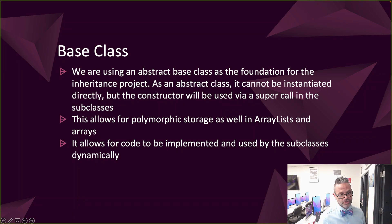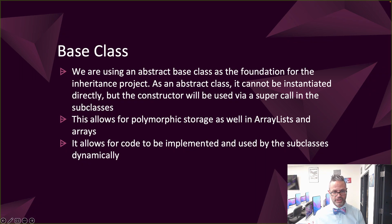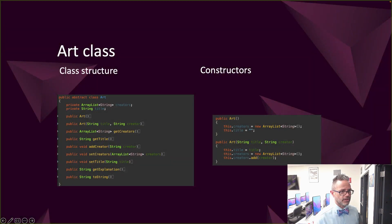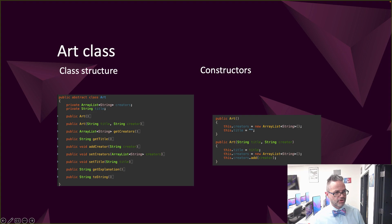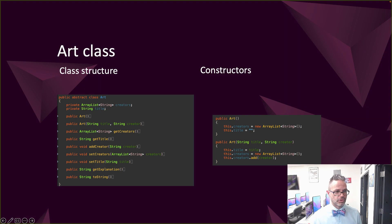Having an abstract base class also allows us to have code implemented directly at that base class level, so all of our getters and setters for the base class are available and can be used directly by our subclasses without having to rewrite all that code. We can see the Art class has a data member called creators — an ArrayList of String — and a data member called title, which is a String, along with two constructors and some methods including getters and setters.